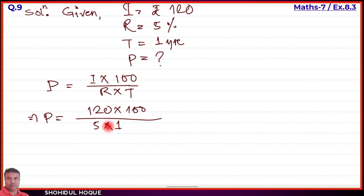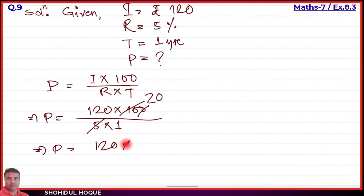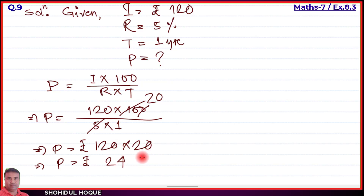Simplifying: 100 divided by 5 = 20. So P = 120 × 20 = rupees 2,400. Therefore the principal amount Dalimi borrowed is rupees 2,400. Question number 9 is solved.